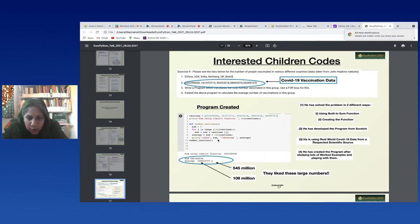They were quite really happy that they used real-world COVID-19 data, you know something which is really topical from a respected scientific source. And also they were thrilled when they got these numbers - the sum at the time of the total number of people vaccinated, 545 million, and the average number 109 million. So now you know the children, the young people, they can make small programs pertaining to real-world topical data.